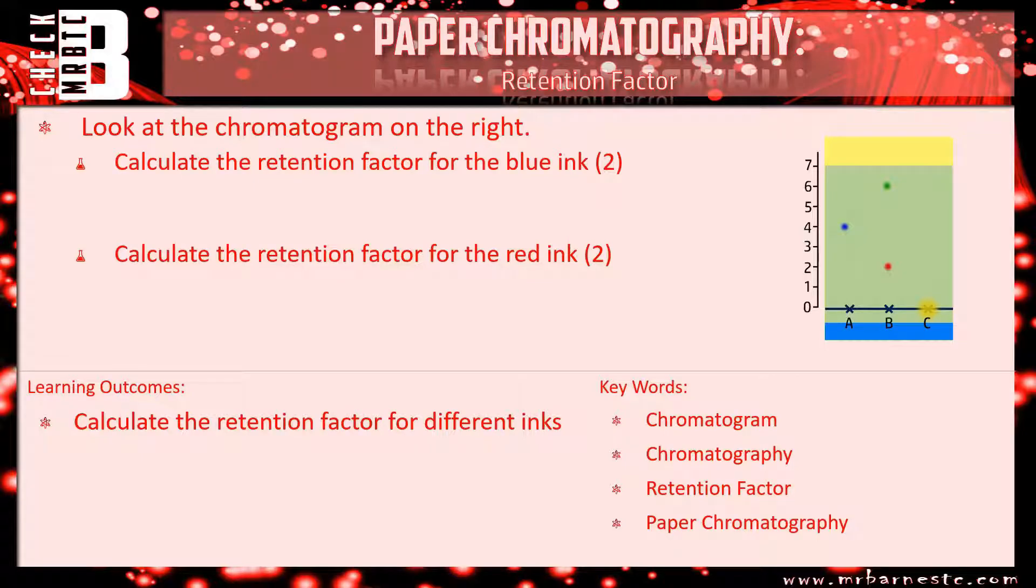Okay, let's go through and see how you've done. So if we start off with the blue ink, nice and simply, we find out the distance the ink has moved, which is four, and the distance that the solvent, the water, has moved, which is seven. So our first mark is for putting four divided by seven, and our second mark is for finding out the answer, which is 0.57. So if you got 0.57, normally you'd get two out of two there.